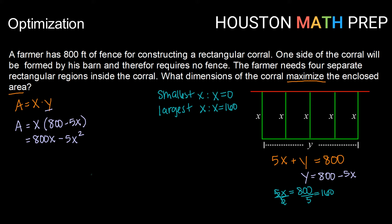So next, we'll see if our function for our area has any critical points in that interval. We'll do that by taking our first derivative, A prime. So that will be 800 minus 2 times 5, or 10x.